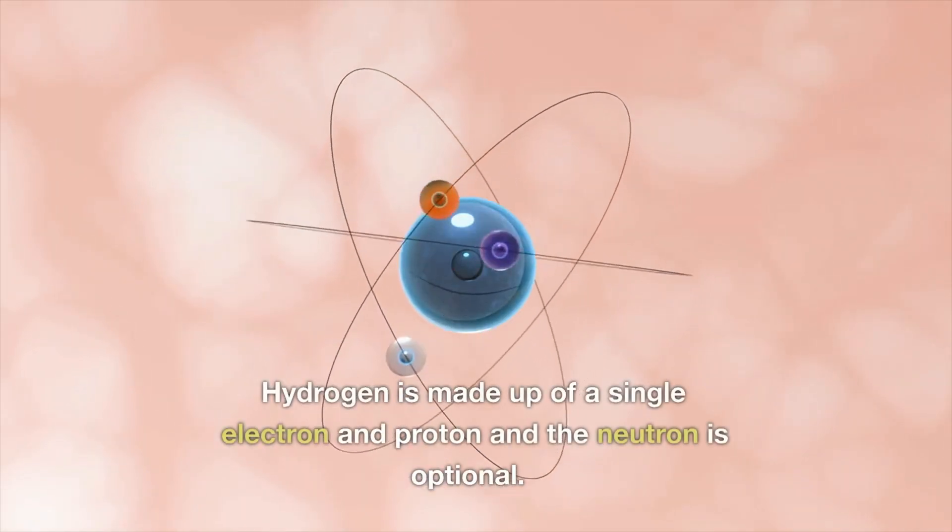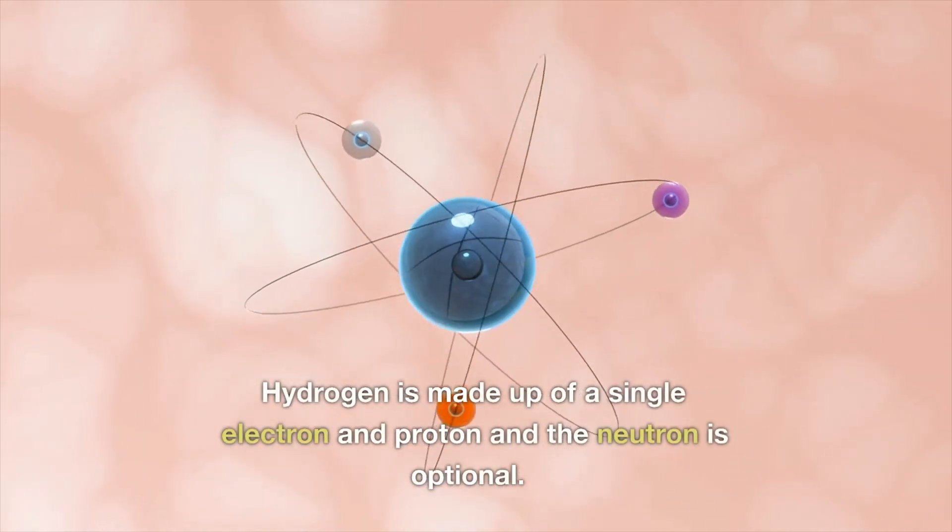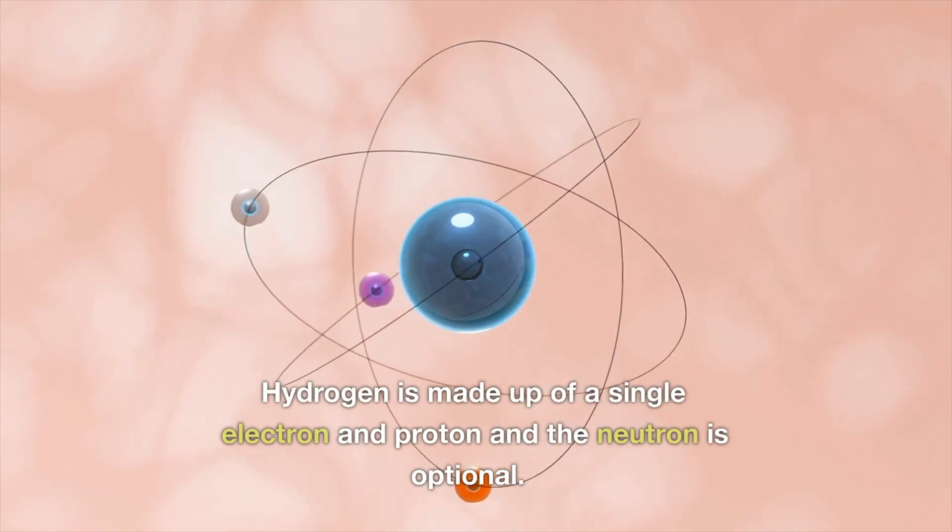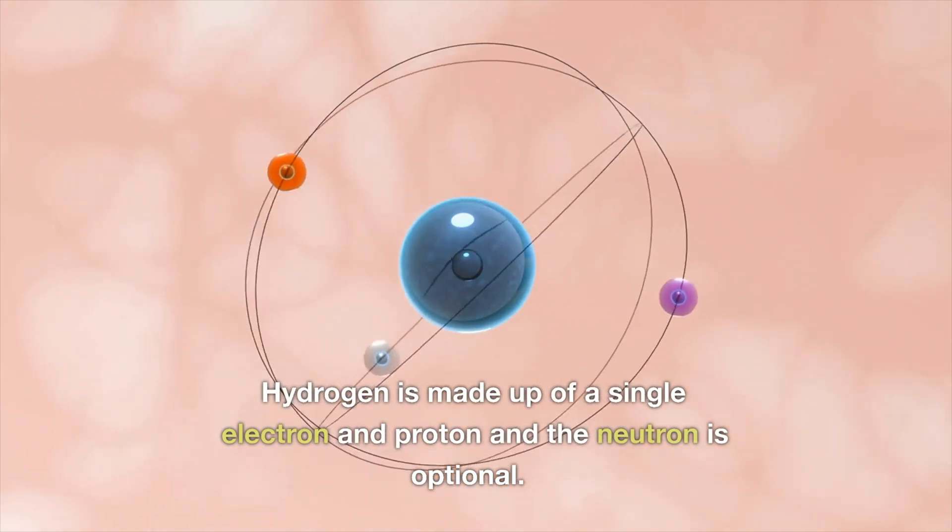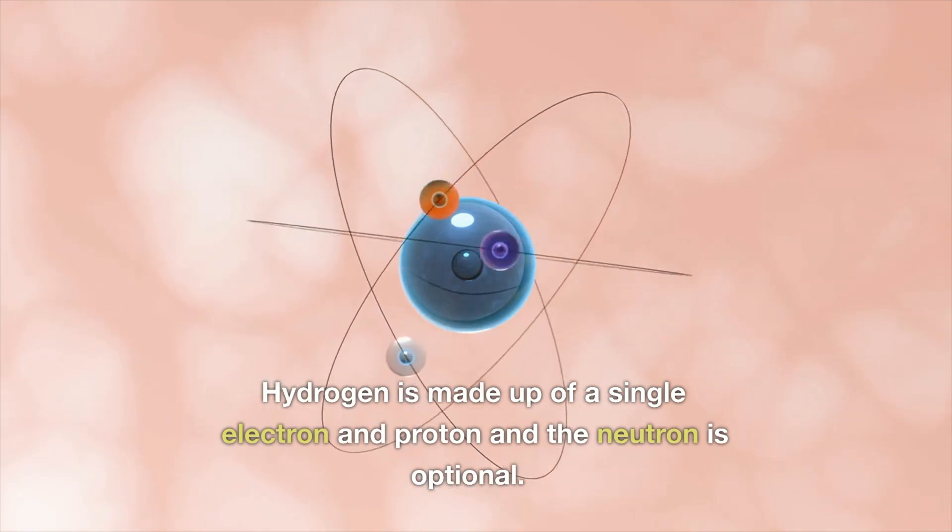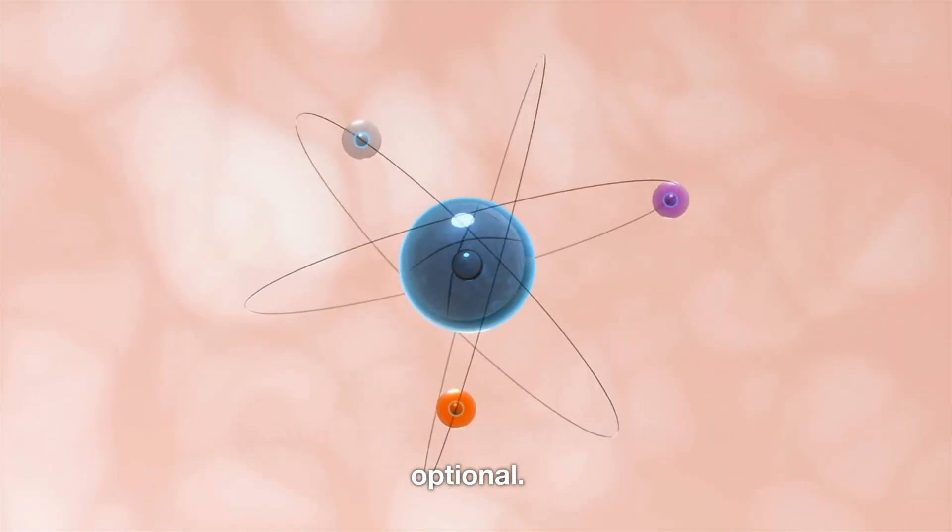Nucleons have a diameter of 1.7 fermis, so a large nucleus, such as the core of a uranium-238 atom with 238 nucleons, has a diameter of about 15 fermis.